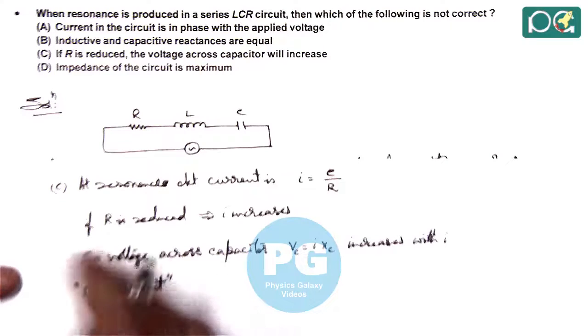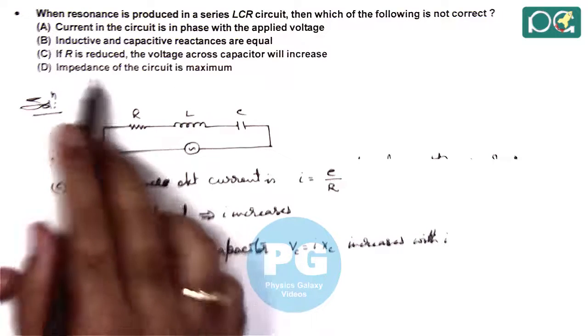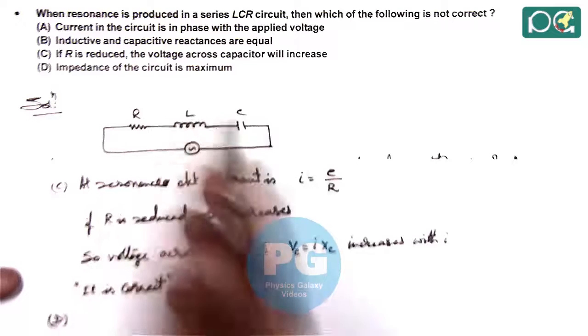So if options A, B and C are correct, obviously D would be the answer, but here also we can check. In option D it is saying impedance of circuit is maximum, that is obviously wrong.